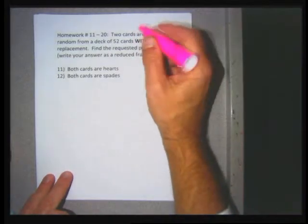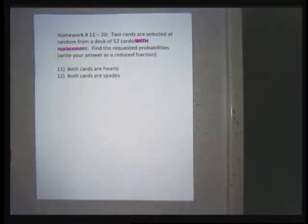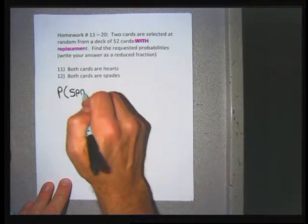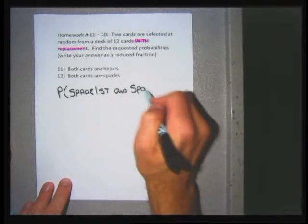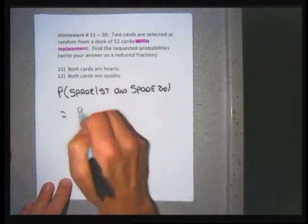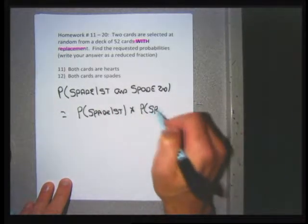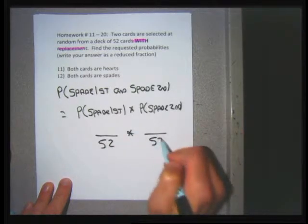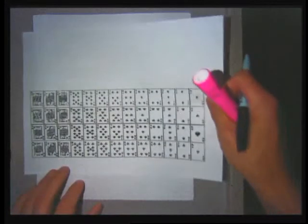The next set of problems is the same kind — picking 2 cards from a deck — but now I'm putting the card back. With replacement means each denominator is going to be 52 because the card goes back and can be selected again. Both probabilities will have the same denominator.